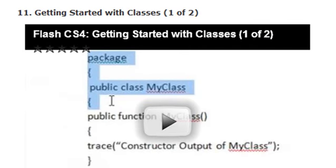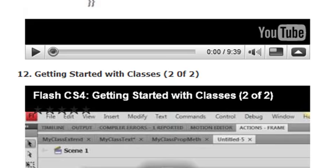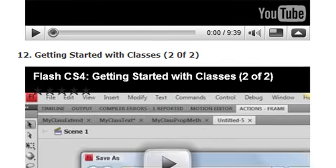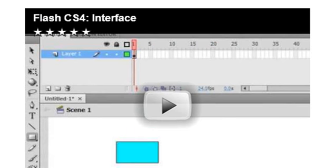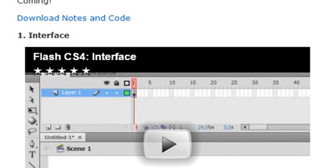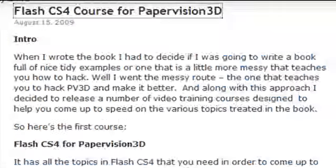In the first classes video, we show you how to run classes using an instance method or using a document class. In the next video, we show you how to add properties and methods and how to access those using dot syntax. That's 12 videos, and once you watch all of them, you'll be up to speed for the book. The book was written for beginners and intermediate developers, so even if you're brand new to Flash, these videos will bring you up to speed and you can start right at the pace with the book. It's been a lot of fun doing this, and we've got a number of video courses that we'll be releasing in the next few weeks to help you come up to speed.